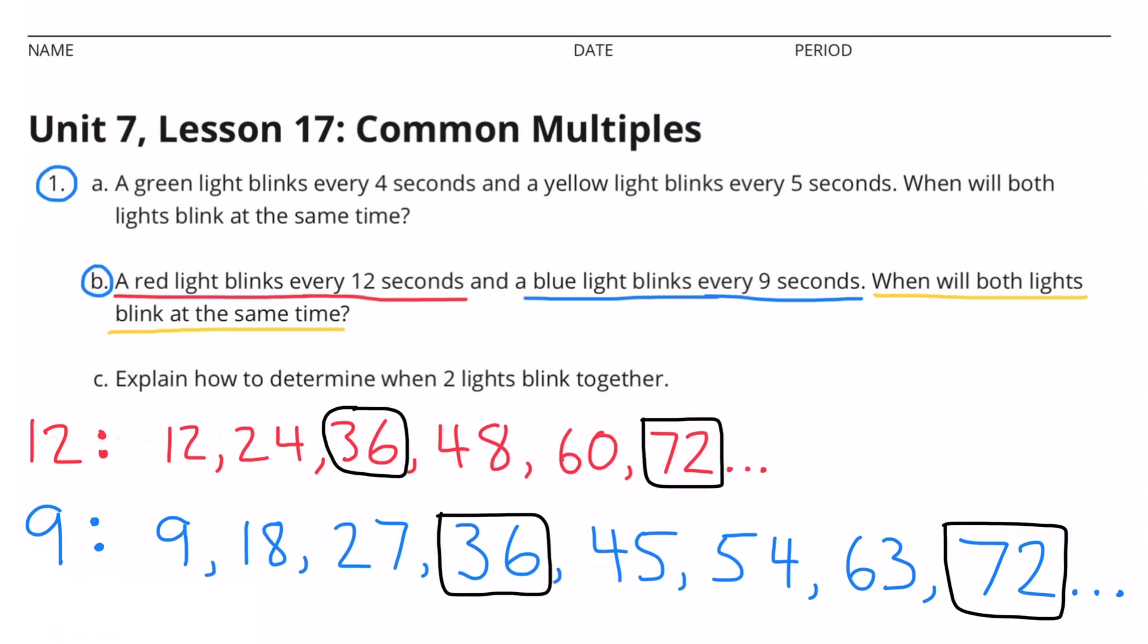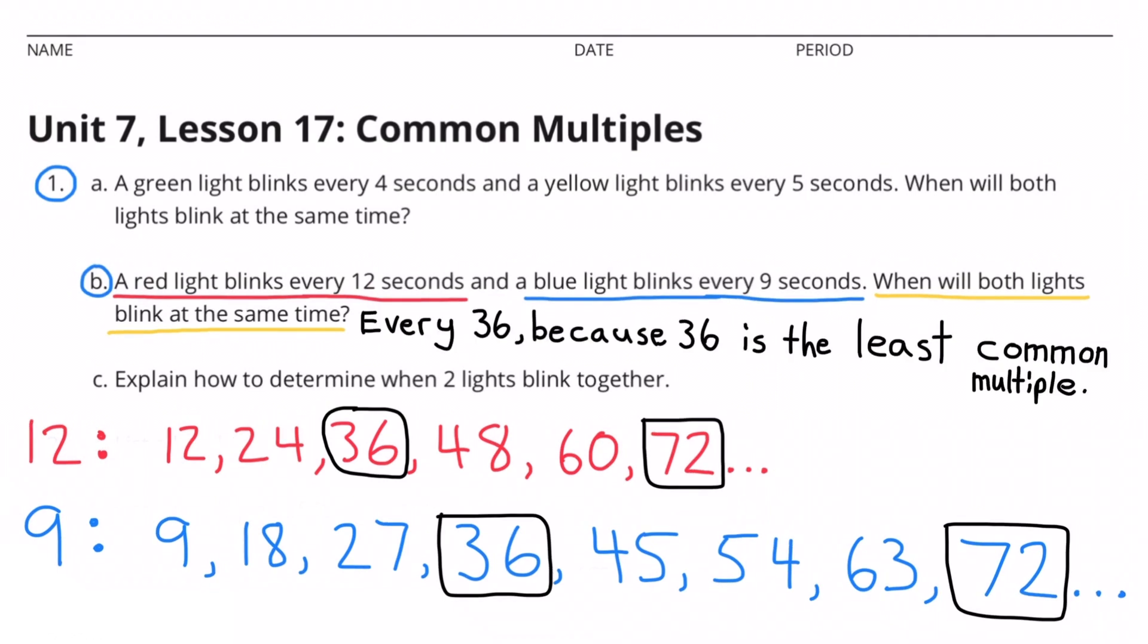I noticed that the least common multiple for 12 and 9 is 36. So the red light and the blue light will blink at the same time every 36 seconds, at 36, at 72, and so on. The red and blue light will blink at the same time every 36 seconds, because 36 is the least common multiple of 12 and 9.